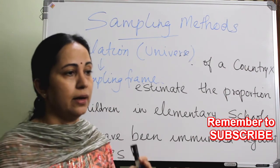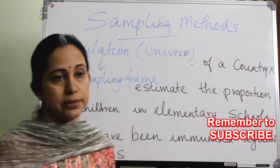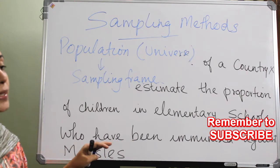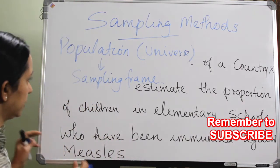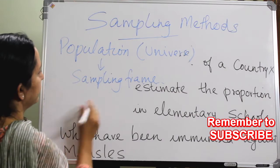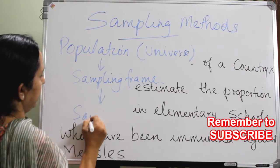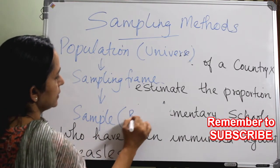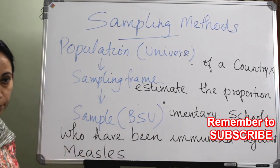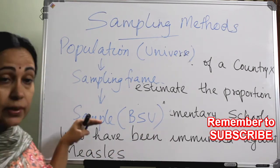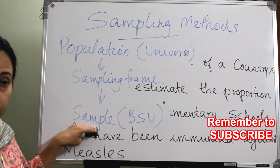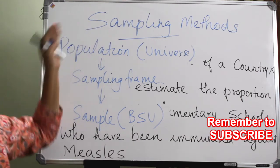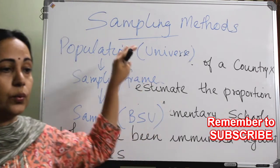From that, I have to take samples according to whatever strategy I am using — whether it is a non-probability or probability sampling method. From this sampling frame, I have to take the sample, which is otherwise called the basic sampling unit or PSU. I will conduct the study on the sample and the results of the study will be generalized to the entire population. That is how we do sampling.